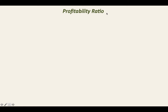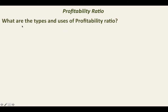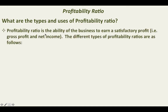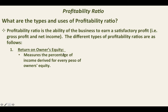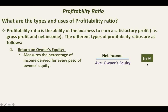We are going to discuss the first category: profitability ratio. Profitability ratio measures the ability of the business to earn a satisfactory profit — referring to gross profit and net income. The first type is return on owner's equity, which measures the percentage of income derived for every peso of owner's equity. In this ratio, we relate net income with equity and calculate the average owner's equity, expressed in percentage.